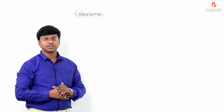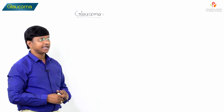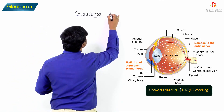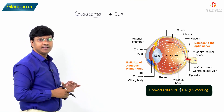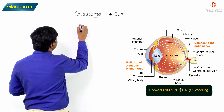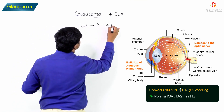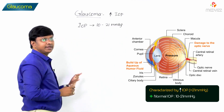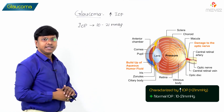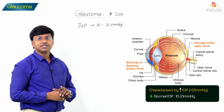Let me discuss the topic of glaucoma. Glaucoma is a clinical condition characterized by increase in the intraocular pressure. The normal intraocular pressure is around 10 to 21 millimeters of mercury. In patients with glaucoma, because of raised intraocular pressure, that will cause progressive damage to the optic nerve.